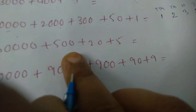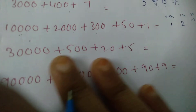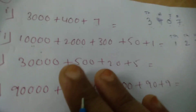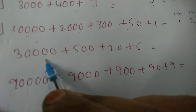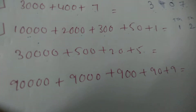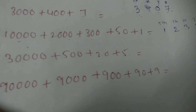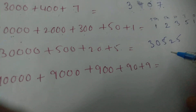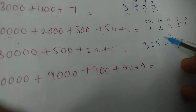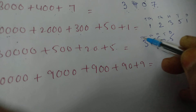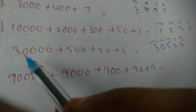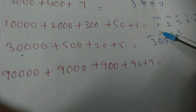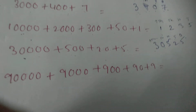Next: 30,000 plus 500 plus 20 plus 5 will be 30,525. You have also learned this in your previous classes — it is very easy. We are going to revise it all. If you have any confusion, put the place values: 1, 10, 100, 1000, 10,000. Put 3 on the ten-thousands place, 5 on the hundreds place, 2 on the tens place, and 5 on the ones place. So the answer is 30,525.